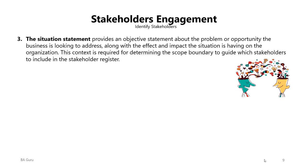The third input is the situation statement, which is an output of the identify problem or opportunity process discussed in the previous section. It provides an objective statement about the problem or opportunity the business is looking to address, along with the effect and impact the situation is having on the organization. This context is required for determining the scope boundary to guide which stakeholders to include in this process and the stakeholders register.